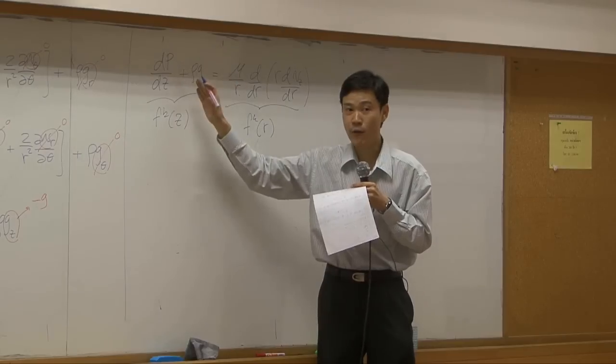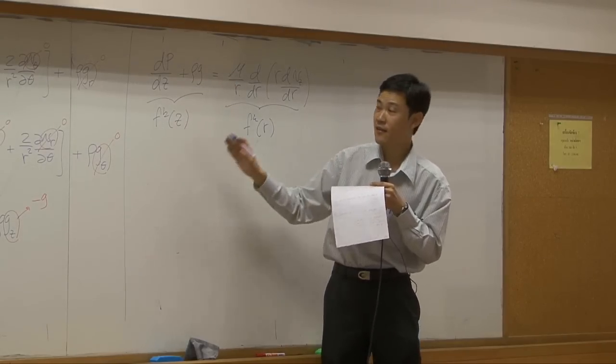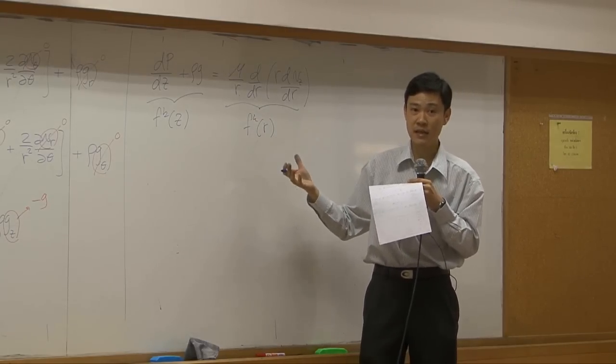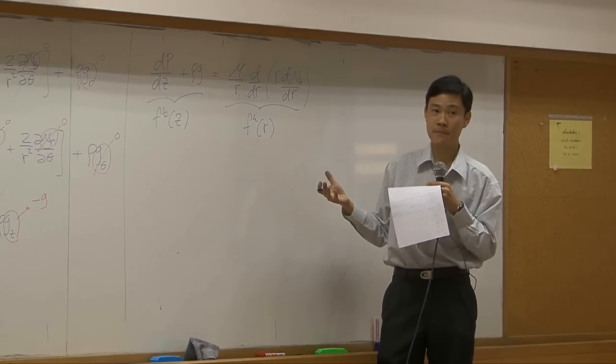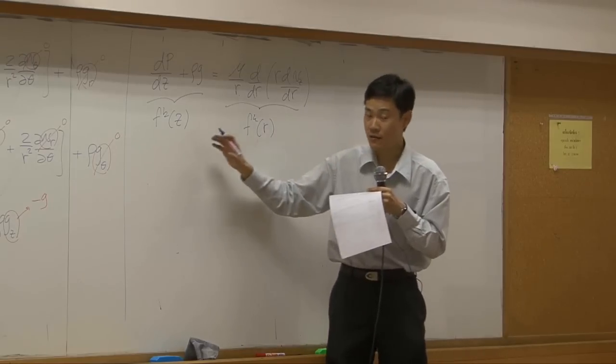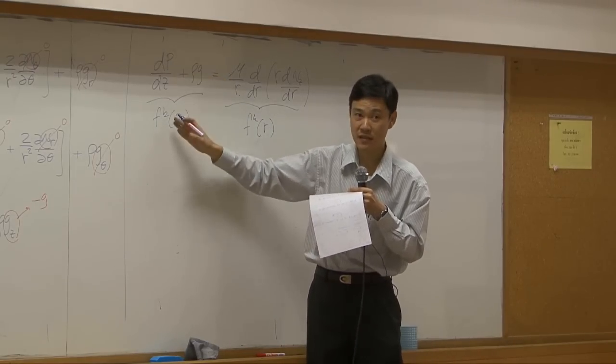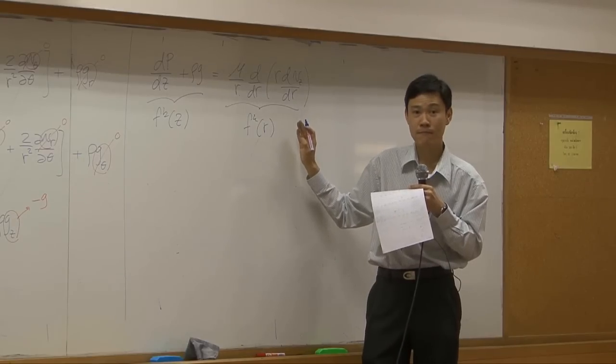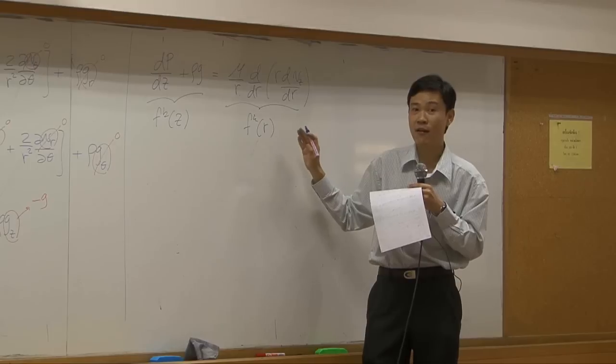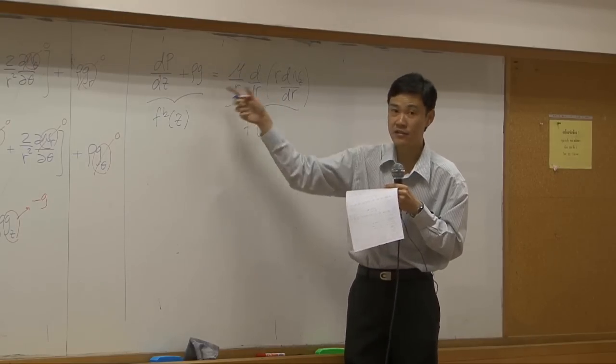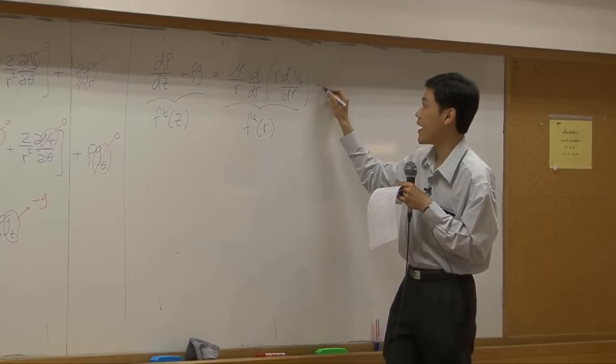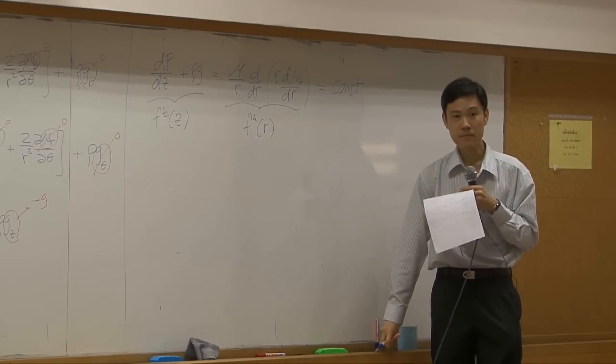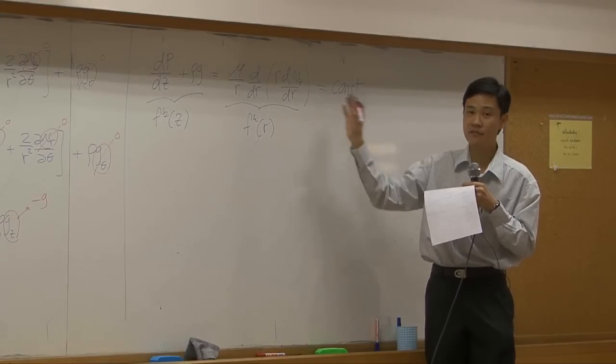If you have one side of the equation change with respect to Z and the other side is changing with respect to R, however, these two sides are always equal. What does it mean? If you allow the left hand side to change with respect to Z and allow the right hand side to change with respect to R, it should never be equal, right? It should not be equal at all time. But according to this equation, these two sides are equal. That means both are not changing with either Z or R. Both are constant. If you can see this, then solving is straightforward.